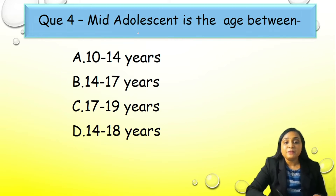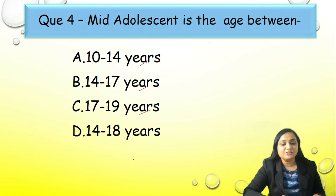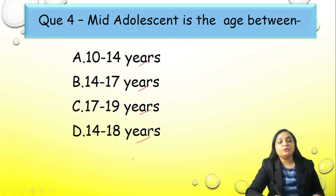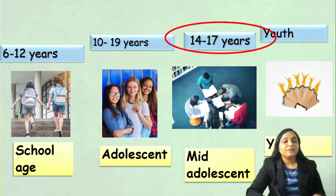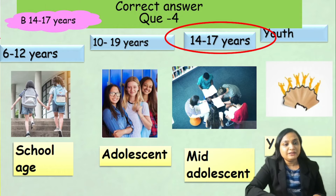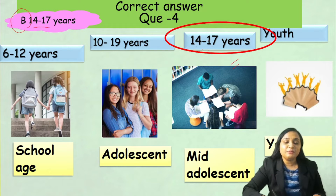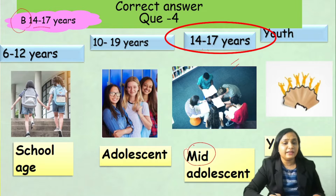Question number 4: Mid-adolescent age is between — A) 10 to 14 years, B) 14 to 17 years, C) 17 to 19 years, or D) 14 to 18 years. Correct answer is option B, 14 to 17 years. Just remember that 14 to 17 years is the mid-adolescent age.